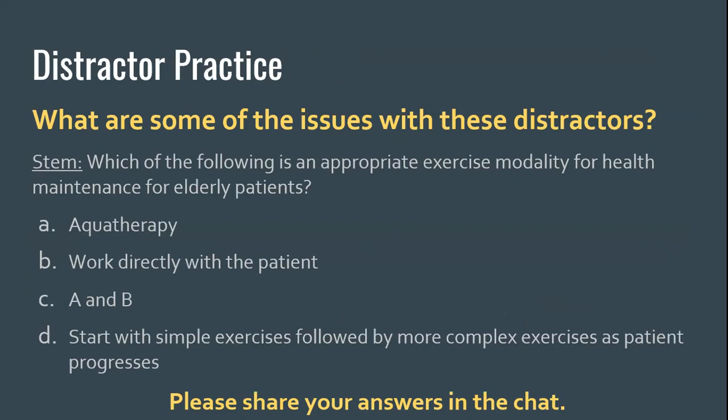I'm going to skip this practice so we have time for other things. Hopefully at this point some of these issues are apparent. The stem here says 'Which of the following is an appropriate exercise modality for health maintenance for elderly patients,' but the phrasing is completely different in each response option. There's an 'A and B' combined option. 'Aqua therapy' is a noun while others start with verbs like 'working' and 'starting.' You want parallel structure and similar phrasing in each response option.